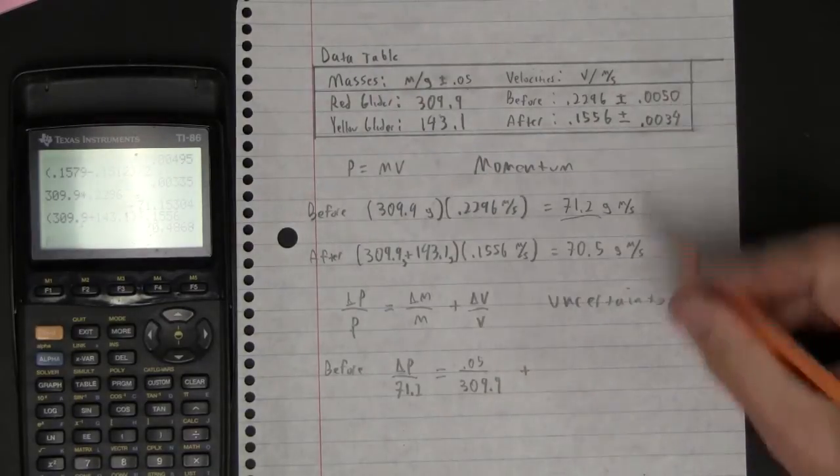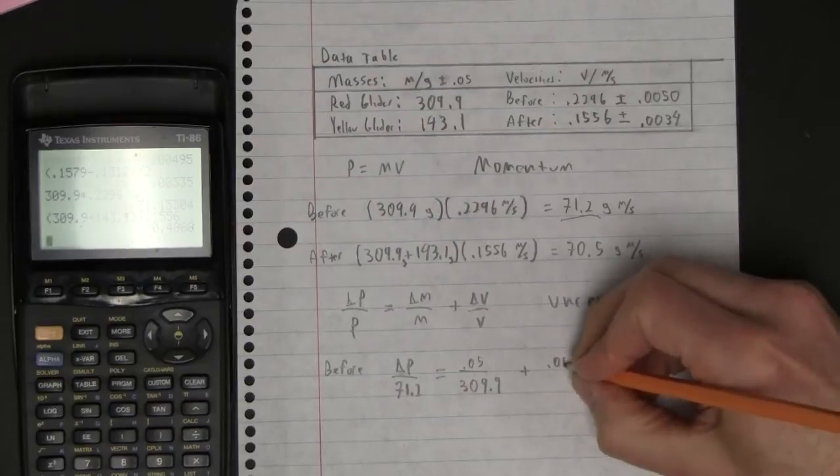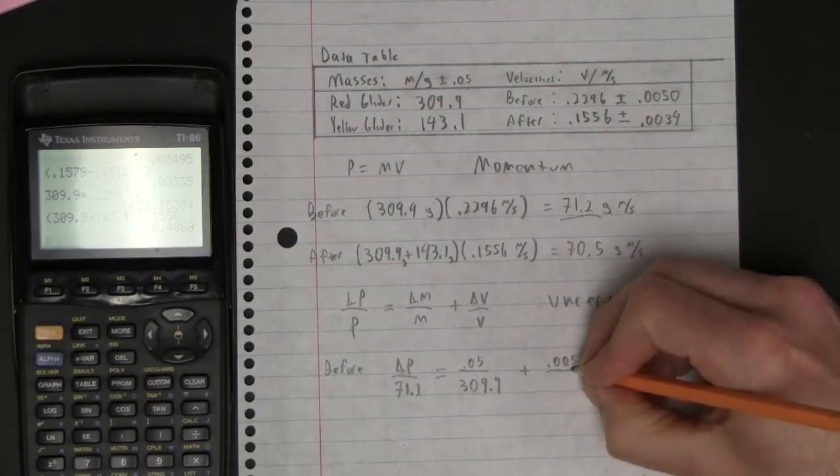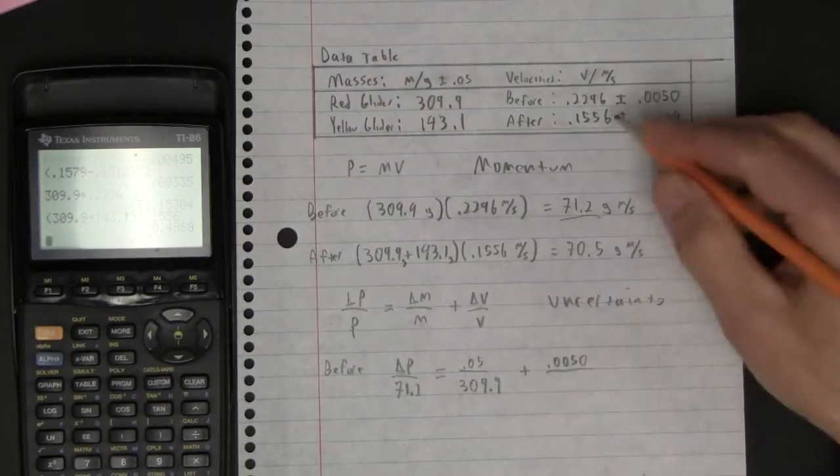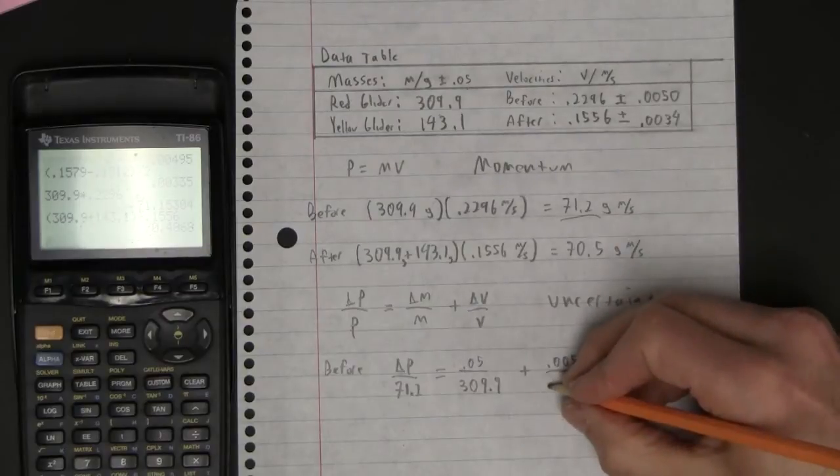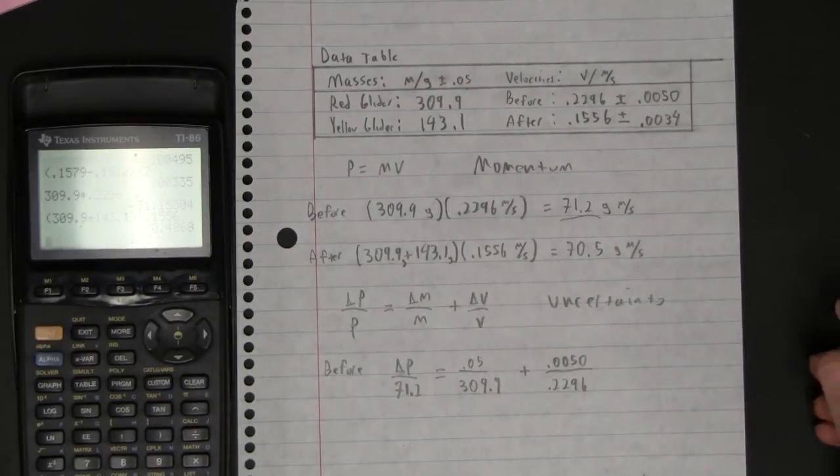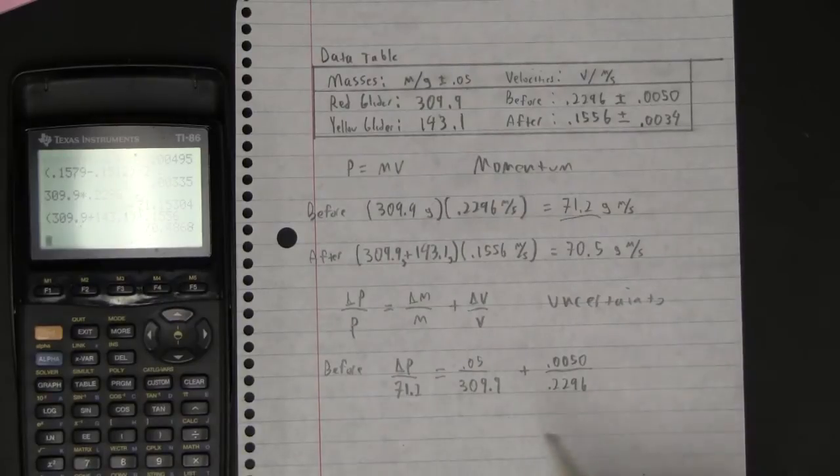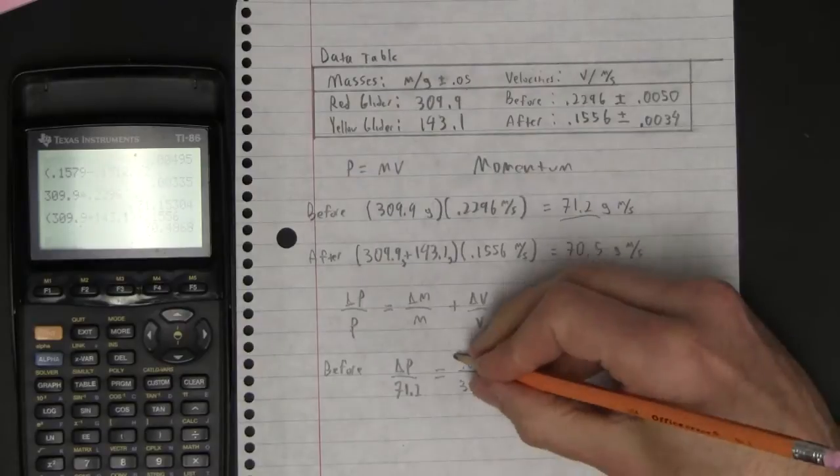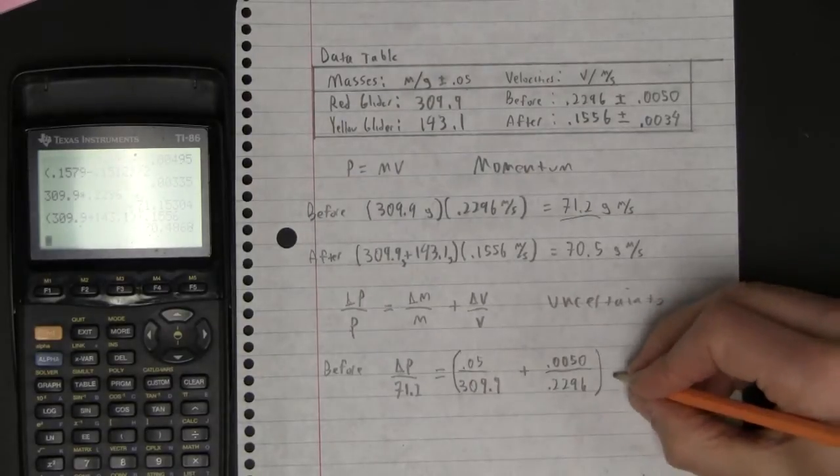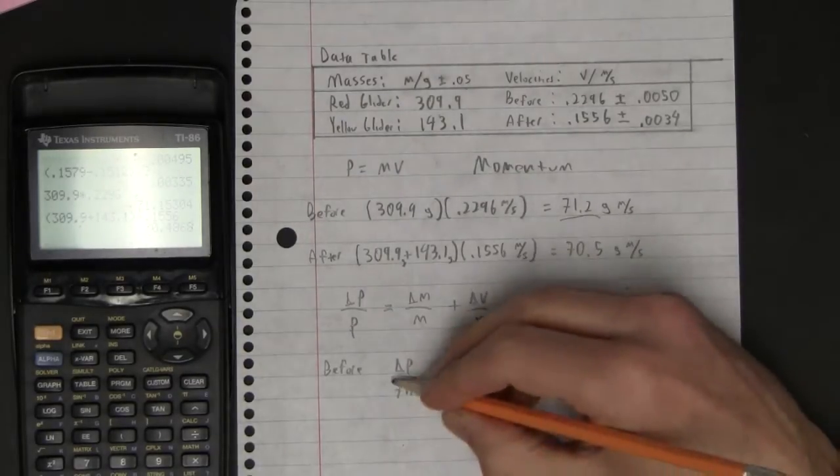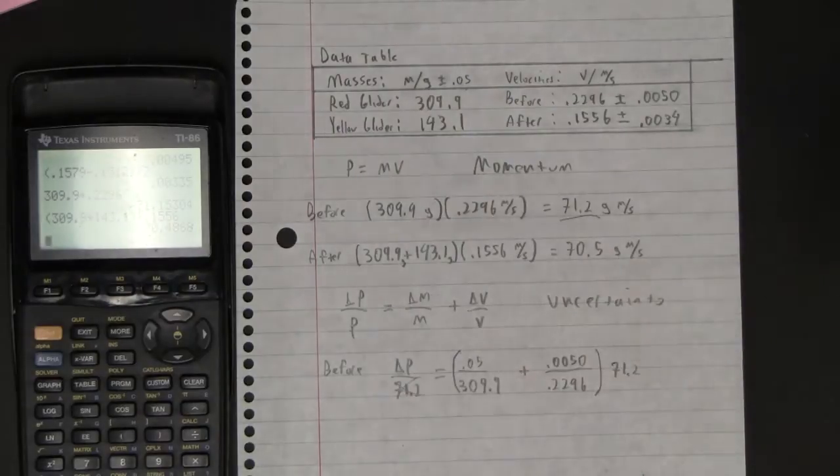And then the uncertainty of the velocity, so 0.0050 divided by what the velocity was, 0.2296. And then if you recall on these types of calculations, it's going to end up being 71.2 times this whole side here. I'm just going to go 71.2 like that, and then I'm all set.